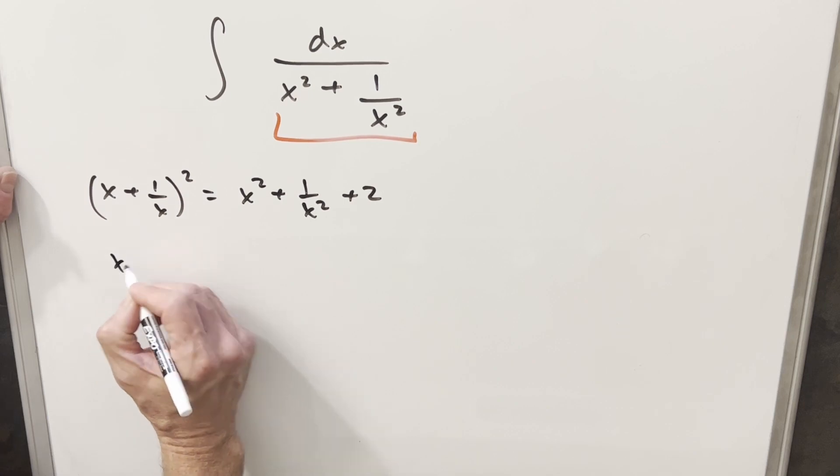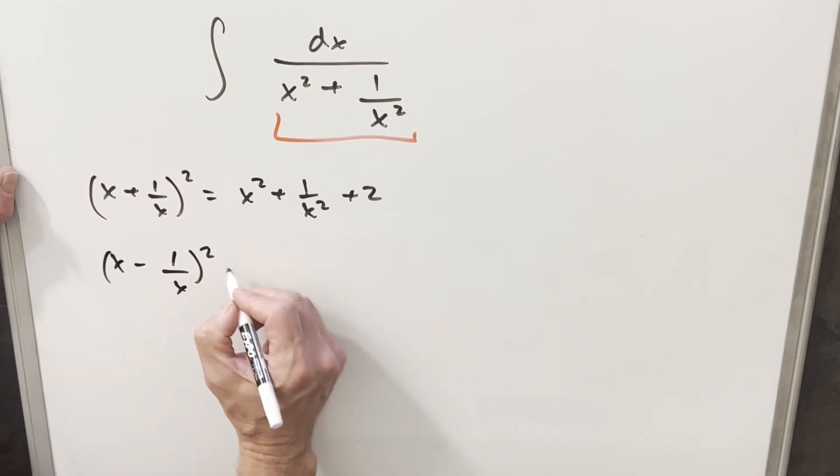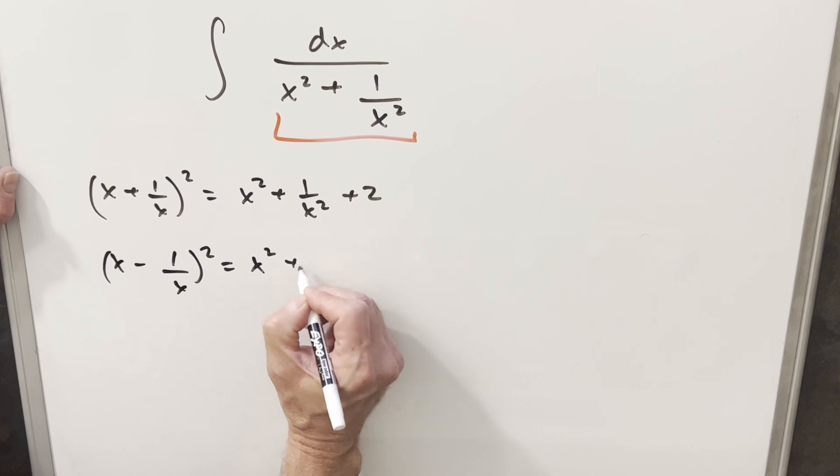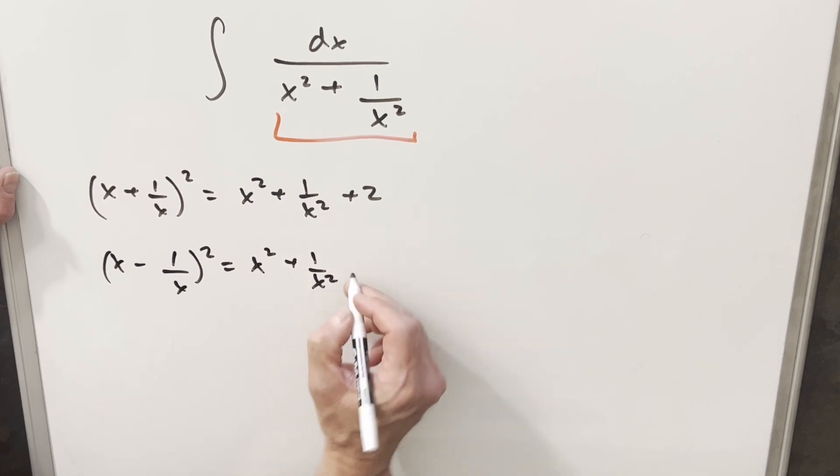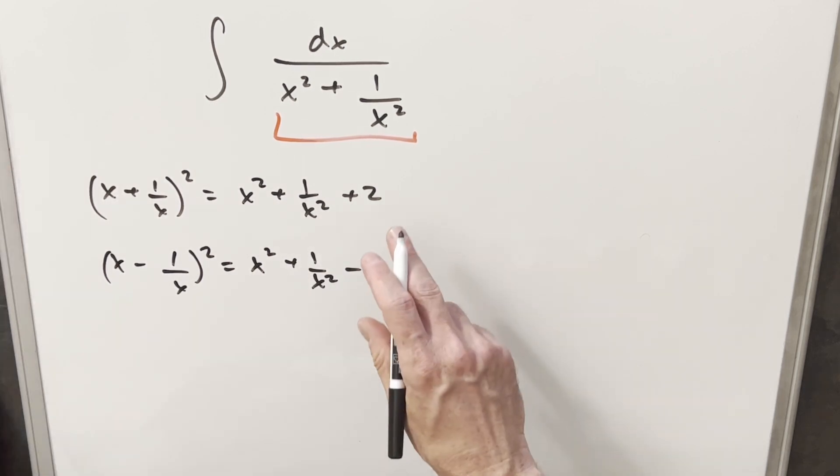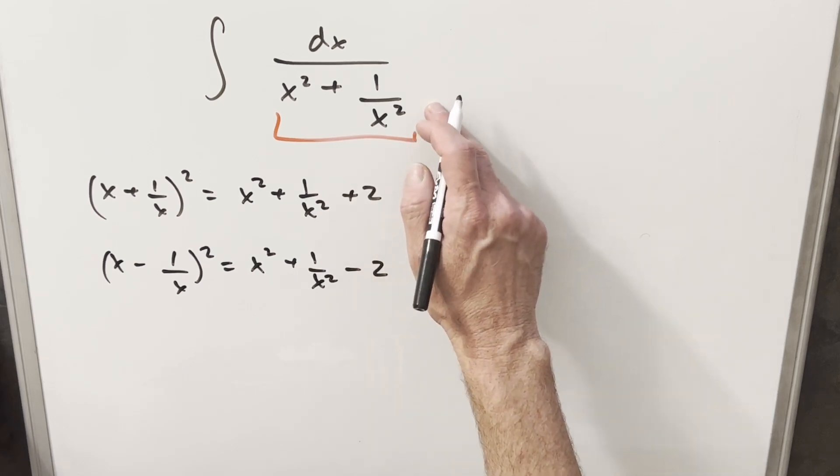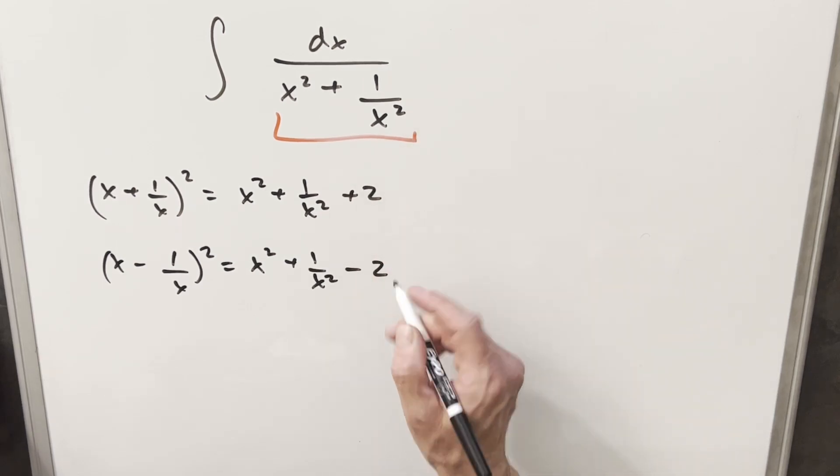And then very similarly, we can look at x minus 1 over x. When we square that, we get something very similar, but now we get a minus 2 here. But just rearranging these two equations, that's going to allow me to write this denominator in two different ways.